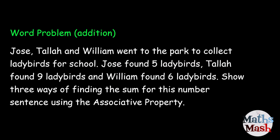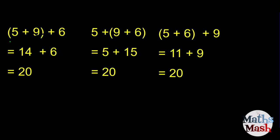Here's our word problem. Jose, Tallah, and William went to the park to collect ladybirds for school. Jose found 5 ladybirds, Tallah found 9 ladybirds, and William found 6 ladybirds. Show 3 ways of finding the sum for this number sentence using the associative property.